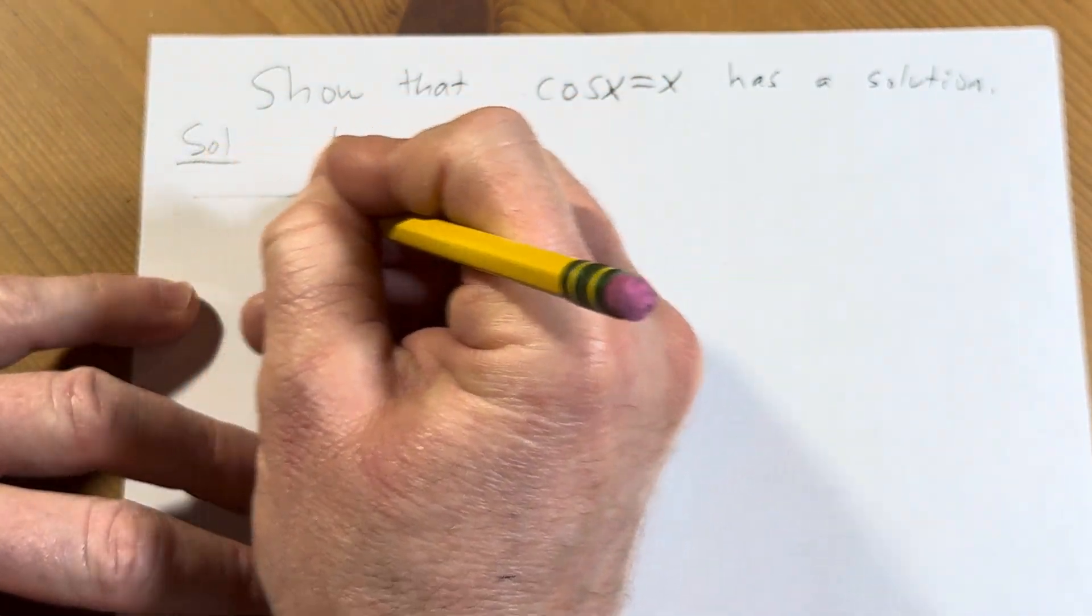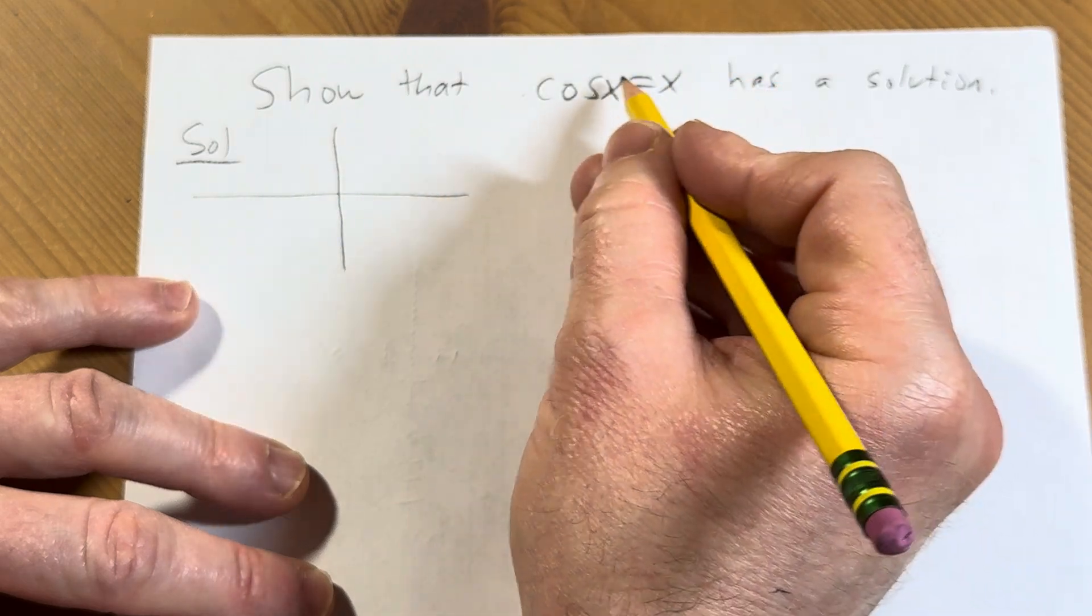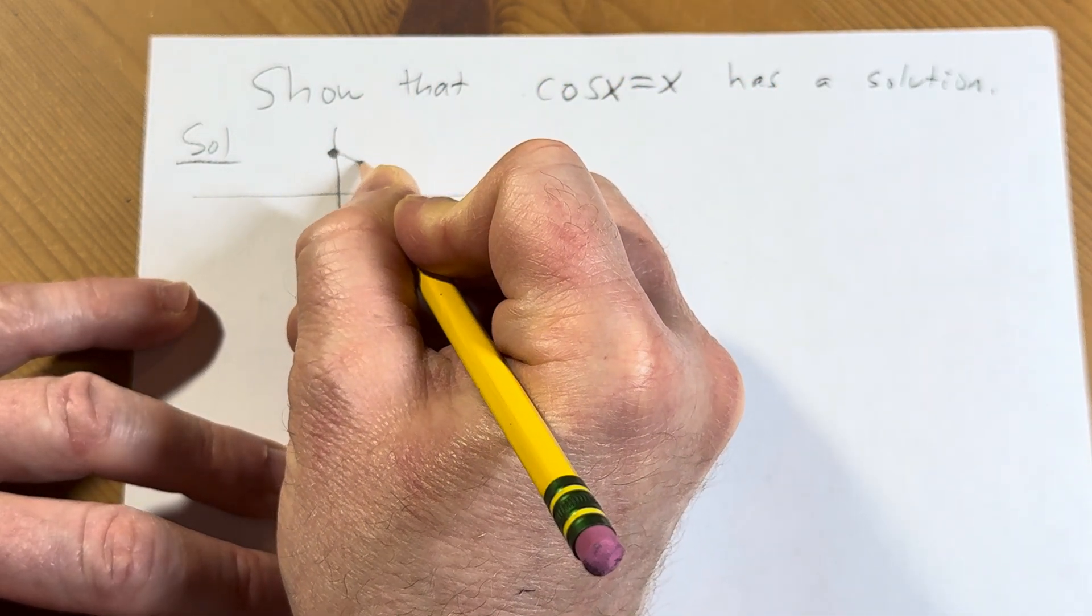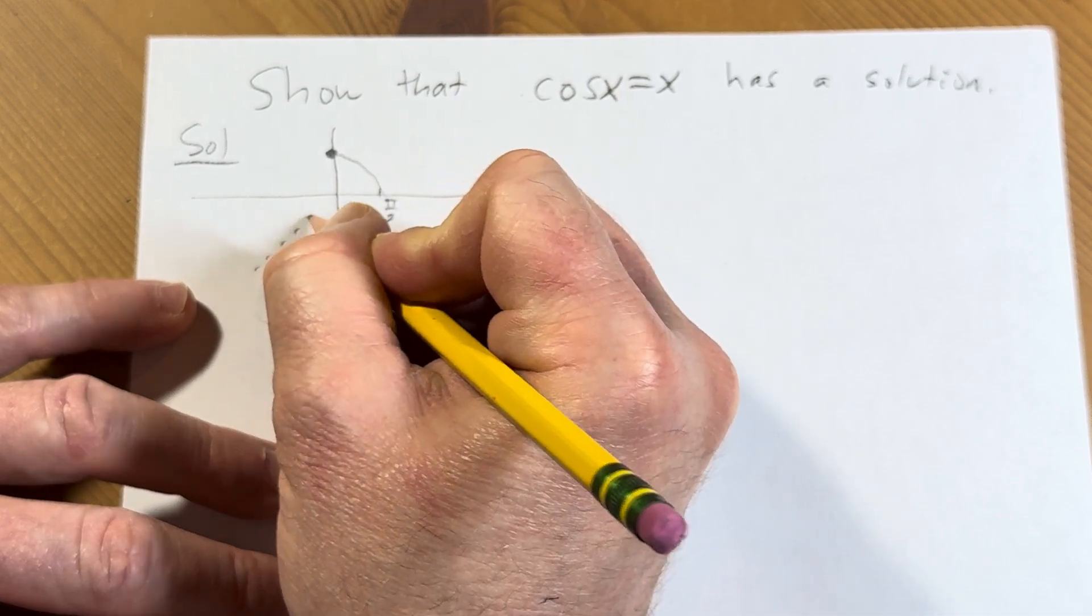So let's start with a quick picture here just to see what's going on. So cosine of 0 is 1, cosine of pi over 2 is 0, so cosine looks like that, and then here's y equals x.